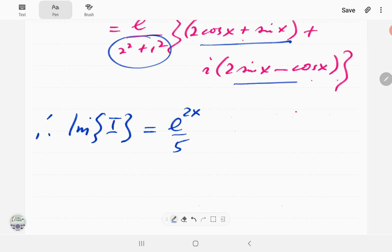This is the real part. This is the real part. That is the imaginary part. So that's going to be 2 sin x minus cos x.